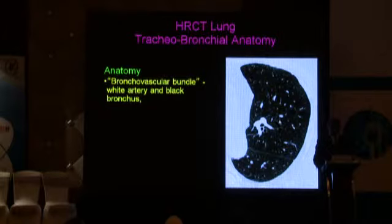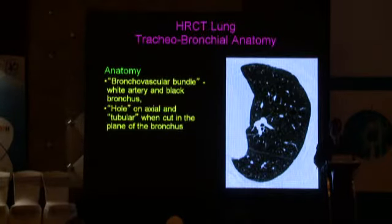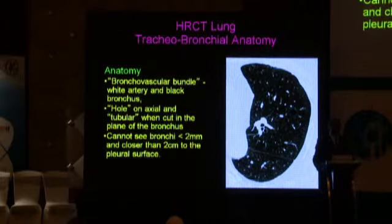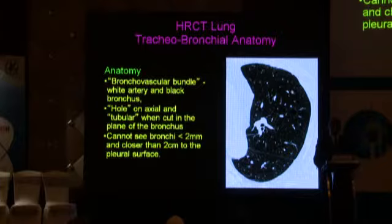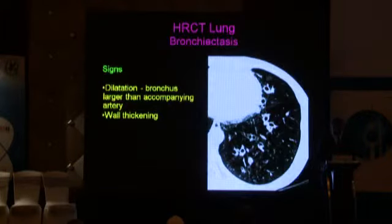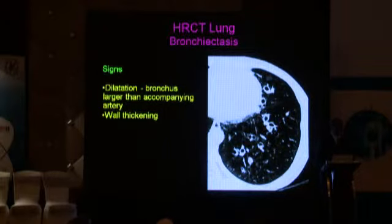Either we see them in cross-section as a kind of an inverted spectacle — the white bronchus and the black artery — or we can see them as tubular structures when we cut them face-on. We never see bronchioles less than 2 millimeters in diameter, and we do not see bronchioles in the last 2 centimeters of the lungs. Therefore, if the bronchus is larger than the accompanying artery, it implies that there is bronchiectasis.